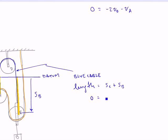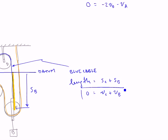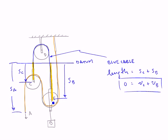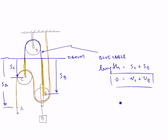And if I differentiate that, then 0 is going to be VC plus VB. So C and B move opposite to each other. And I suppose that makes sense now if you go back and look at that original blue cable.